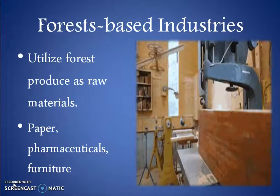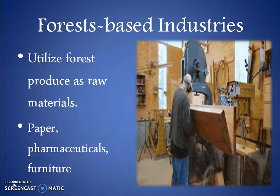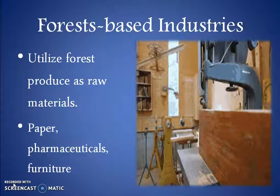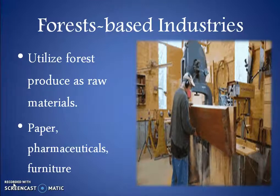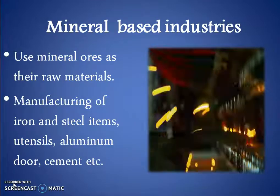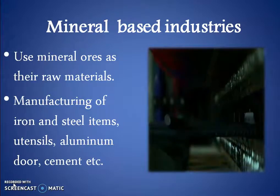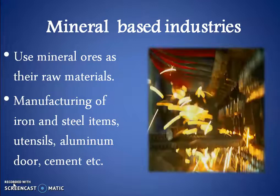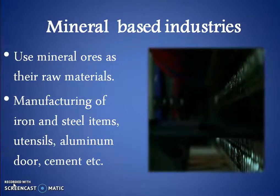Second, forest-based industries. These type of industries utilize forest produce as raw material. For example, manufacturing of paper, pharmaceuticals, and furniture. Third, mineral-based industries. Such type of industries are primary industries that use mineral ores as their raw material. The products of these industries feed other industries.